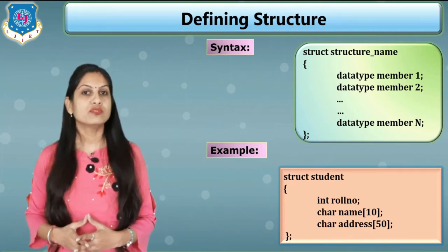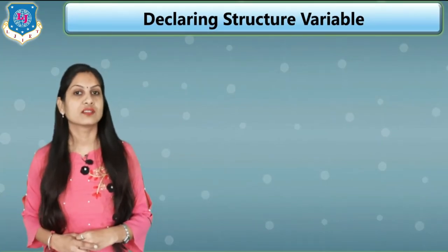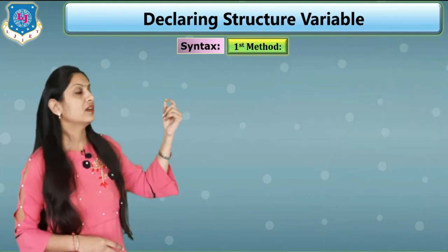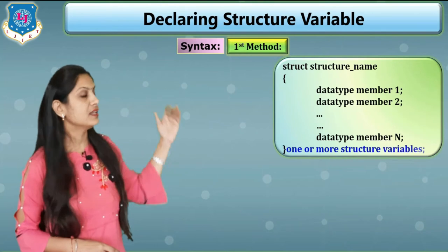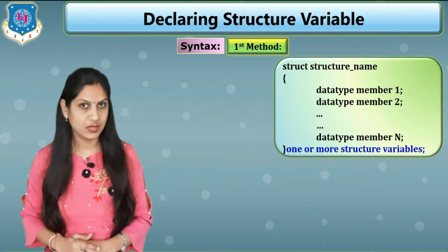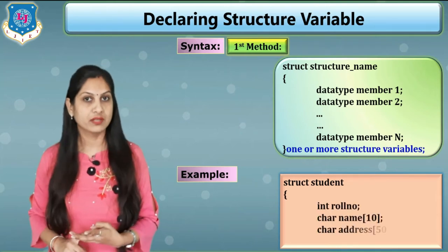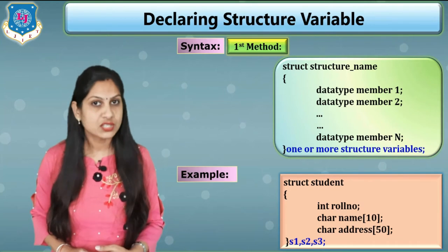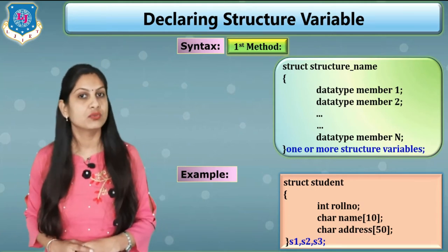Whenever you write a program using a structure, the first step is to define the structure. The second step is to declare the structure variable. To declare the structure variable there are two different methods. In the first method, the syntax combines the defining structure: use struct, structure name, inside curly brackets the data types and members, and after the closing bracket write the variable names then semicolon. Suppose you want to store data of three students, you declare three variables: s1, s2, s3.